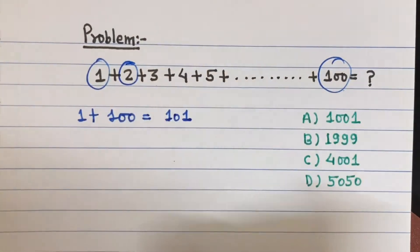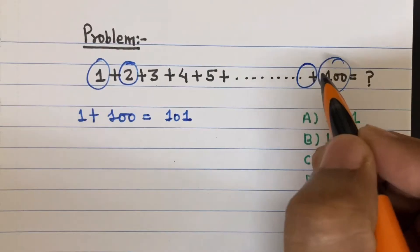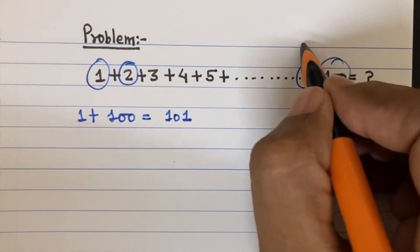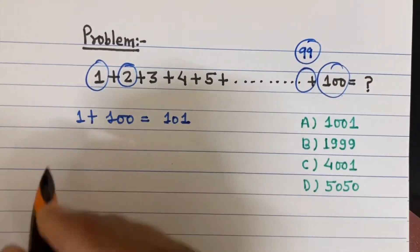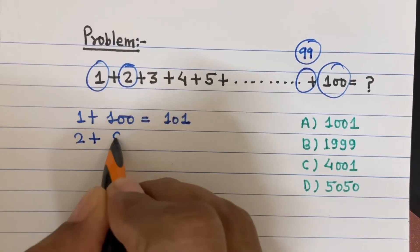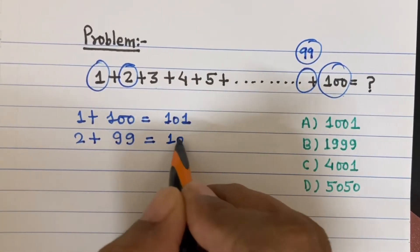Now I'm going to take the second number and the second last number. The second last number would be 99, so 2 plus 99 also equals 101.